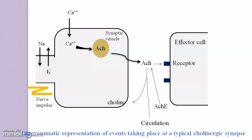The acetate gets washed off into the circulation, while the choline gets reabsorbed by the presynaptic terminals and can be used for the further synthesis of acetylcholine. This reabsorbed choline reacts with acetyl CoA in the presence of choline acetyltransferase to form acetylcholine, and this newly synthesized acetylcholine gets stored in synaptic vesicles. These are the events taking place at a typical cholinergic synapse.